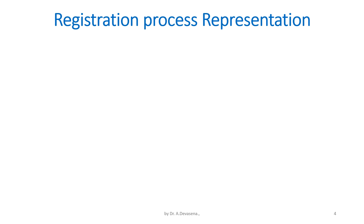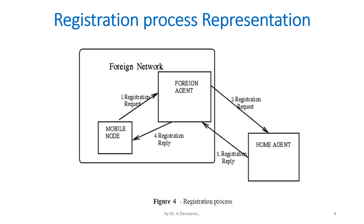The registration process is represented with the help of a small diagram. The mobile node is in a foreign network. First it sends the registration request to the foreign agent. The foreign agent in turn sends the registration request to the home agent in step 2. In step 3 the home agent sends the registration reply to the foreign agent. The foreign agent in turn sends the registration reply to the mobile node.